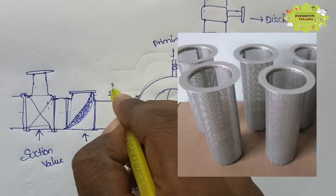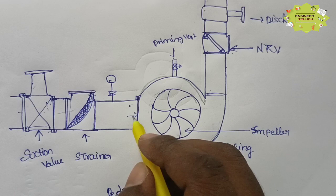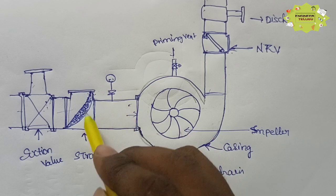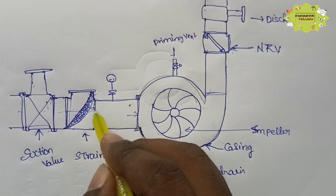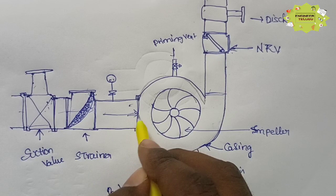Here you can see how pressure is added and how it can be removed. The impurities are removed from the flow. Next, the fluid enters the casing.